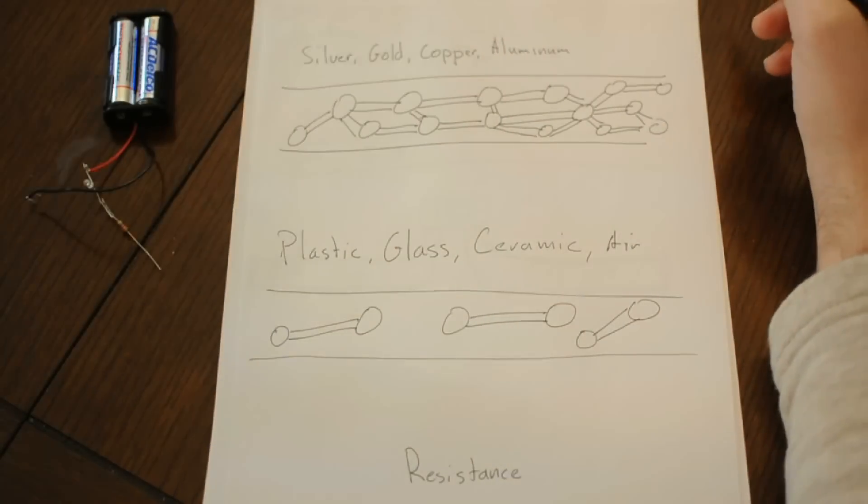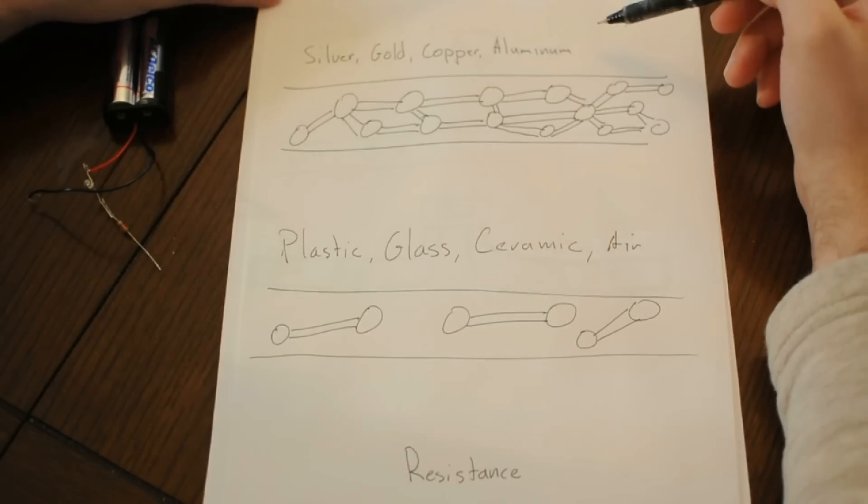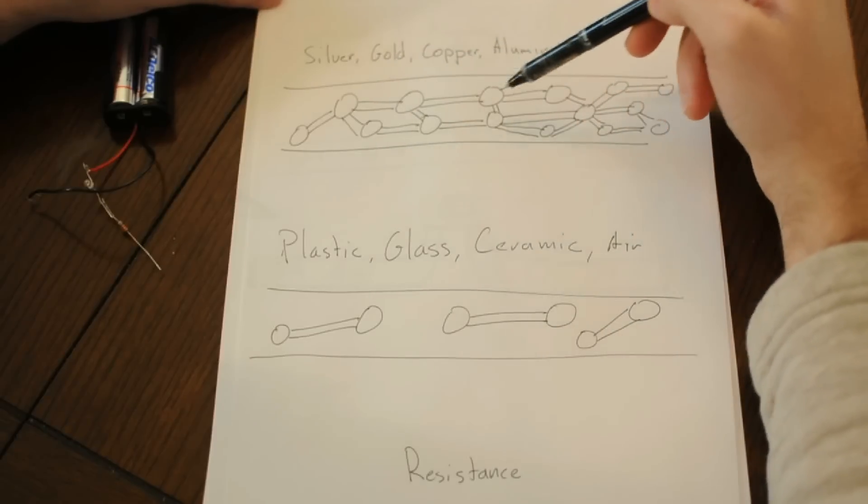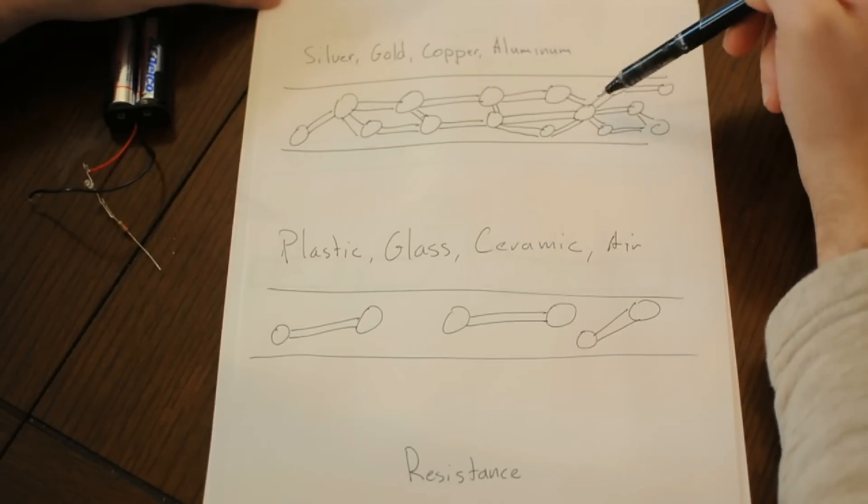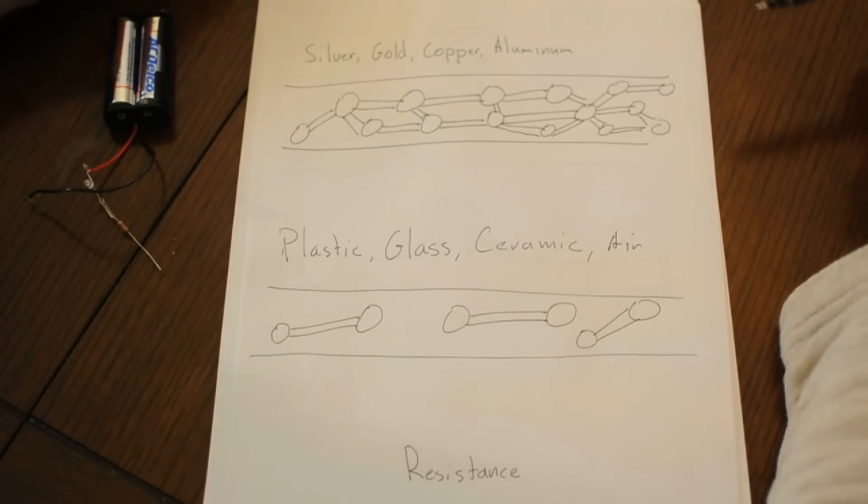That path is made out of conductors, and conductors are materials that have the property of having a lot of spots for the electrons to hop around and go through. So silver, copper, gold, aluminum, these are all conductors.